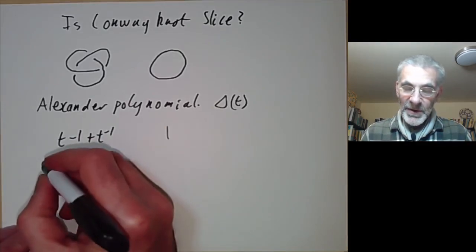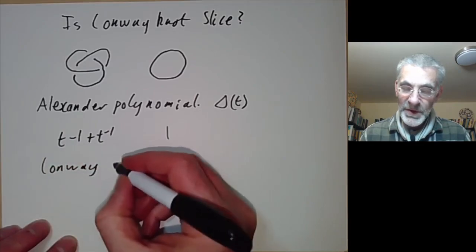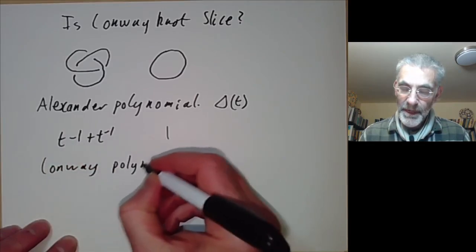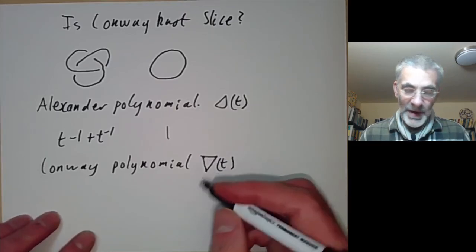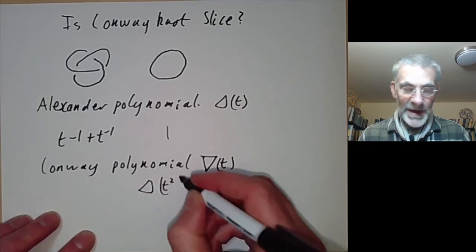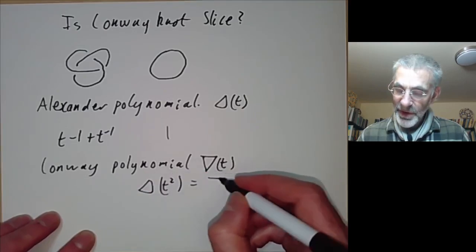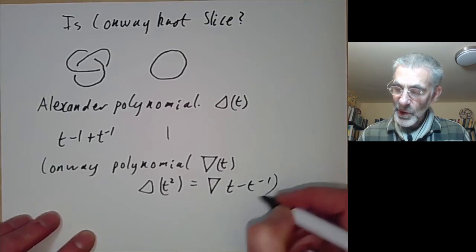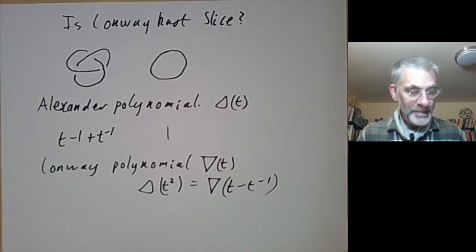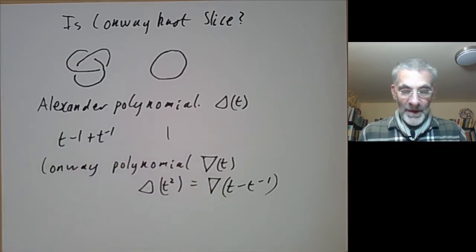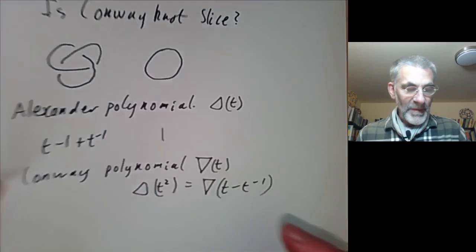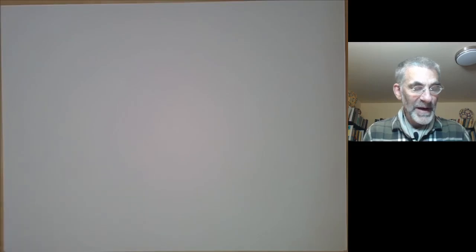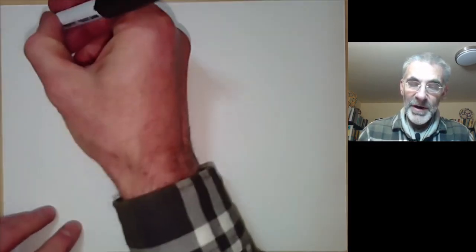For complicated historical reasons, there's a variation of the Alexander Polynomial called the Conway Polynomial, usually denoted by delta of t. These are related because the Alexander Polynomial of t squared is equal to the Conway Polynomial of t minus t to the minus 1. You can figure out what the Alexander Polynomial of a knot is using the Skein relation, which is a little bit easier to do for the Conway Polynomial, so I'll do it for that.